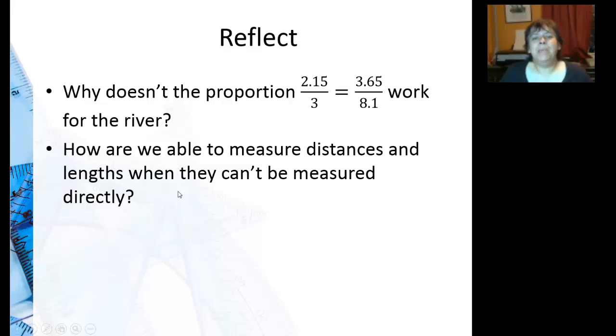So to reflect: why doesn't the proportion 2.15 over 3 equals 3.65 over 8.1 work for the river? So hopefully you should be able to answer that question looking at the triangles. Make sure to separate them. And how are we able to measure distances and lengths when they can't be measured? We use three different methods, and there are actually a couple more.